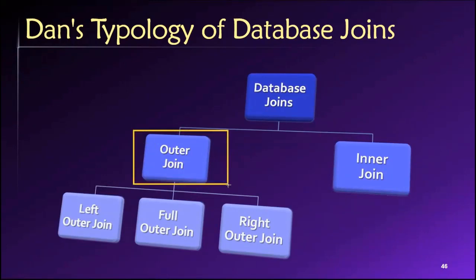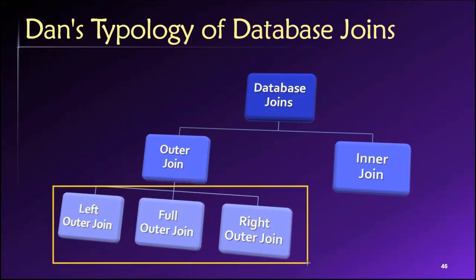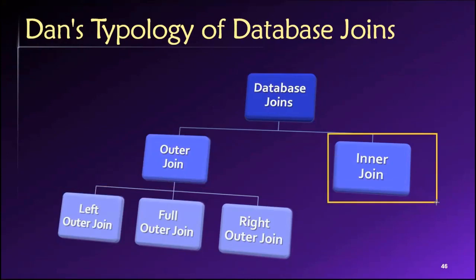Generally you will use inner joins much more often than outer joins, and among outer joins, as you can see, we have three different types. So you can have a left outer join, a right outer join, or a full outer join. And we'll learn all about what these different types of outer joins are, along with what inner joins are.